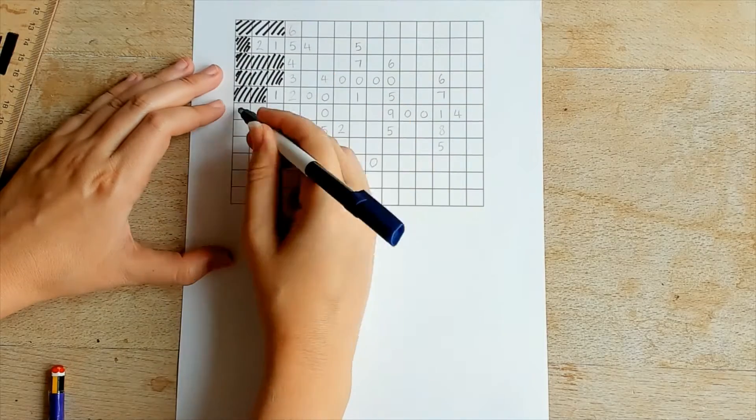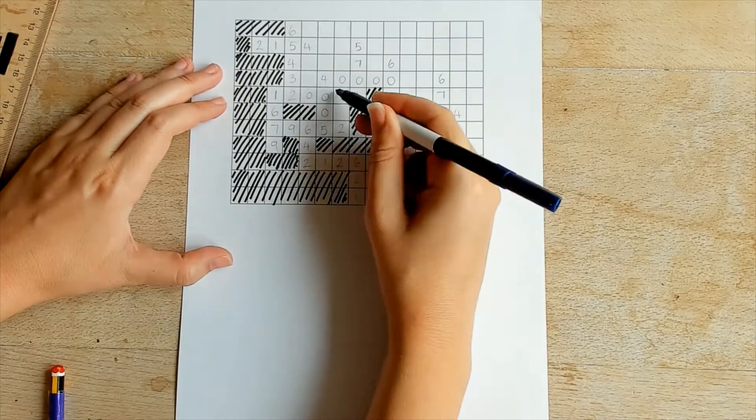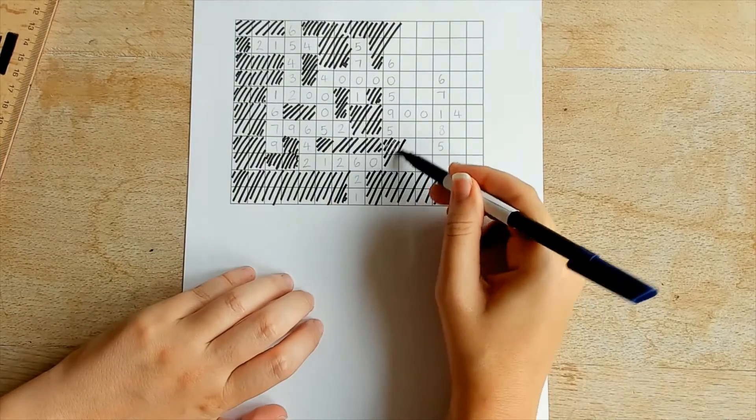Next, learners shade in the squares which they have not used. They can also choose to outline the puzzle grid squares to make them extra clear but this is optional.